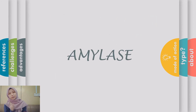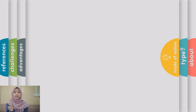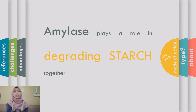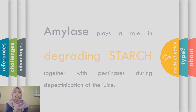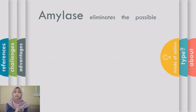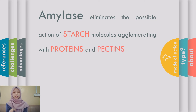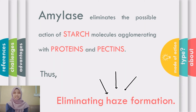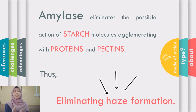Amylase is another important enzyme used in fruit juice processing. Amylase integrates the starch together with acinesis during the depectinization of juice. It eliminates the possible action of starch molecules agglomerating proteins and pectins, thus eliminating hazing, which is an undesirable condition in fruit juice products.